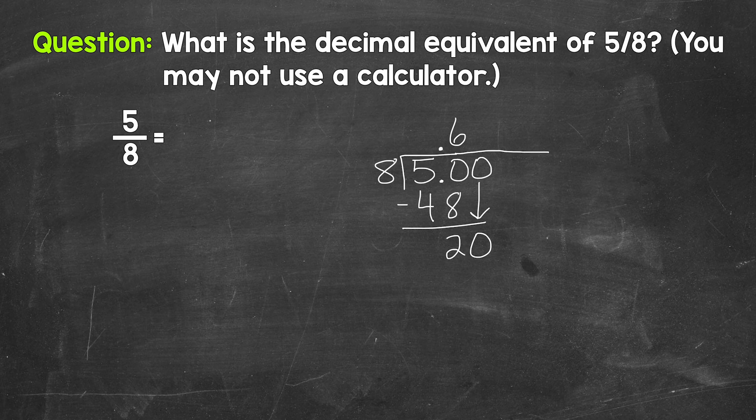How many whole groups of eight in 20? How many eights in 20? Two. That gets us to 16. Multiply. Two times eight is 16. Subtract. 20 minus 16 is four.